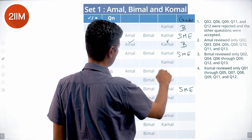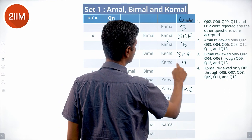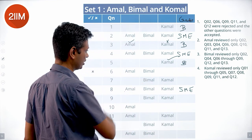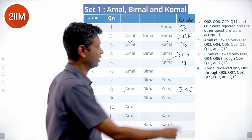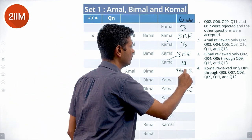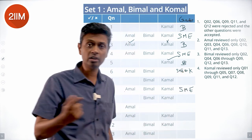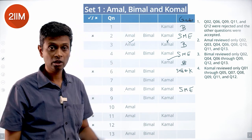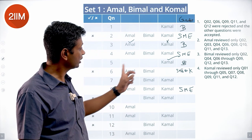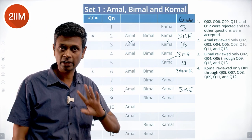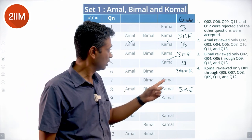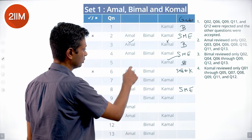For another question reviewed by Amal and Bimal and then rejected — either Komal created it or an SME created it. If an SME created it, both Amal and Bimal should have rejected it. If Komal created it, then Amal rejects first, then it goes to Bimal, and Bimal also rejects. Both scenarios lead to the same result, so either is possible.